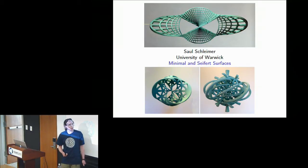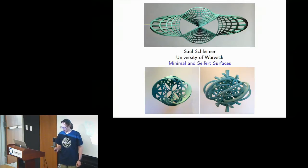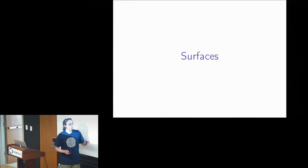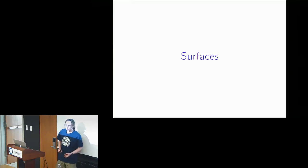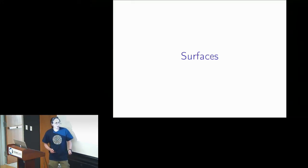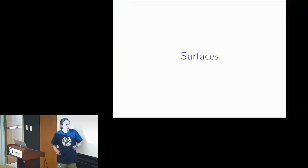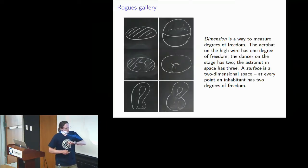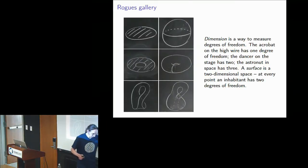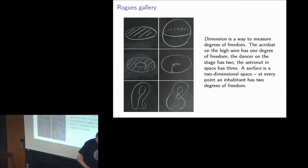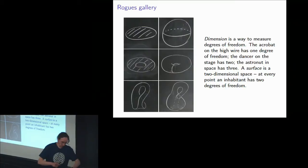My name is Saul Schleimer from the University of Warwick, and I'm going to talk about minimal and Seifert surfaces. Let me start with surfaces, because I'm not supposed to assume that everyone is a mathematician or even a topologist. So what's a surface? The key thing to understand is what is dimension. Dimension is measuring degrees of freedom.